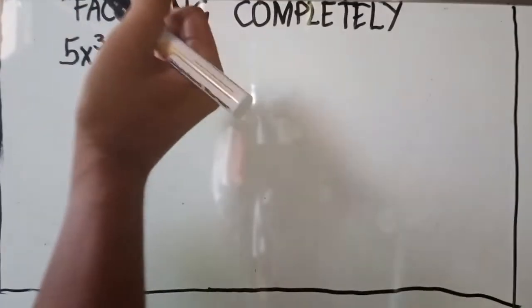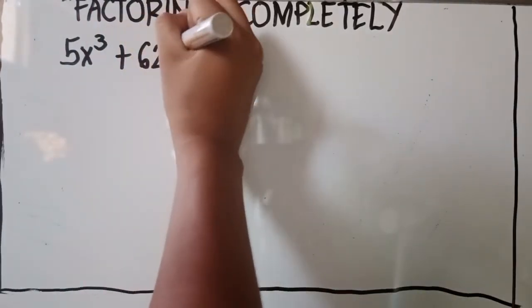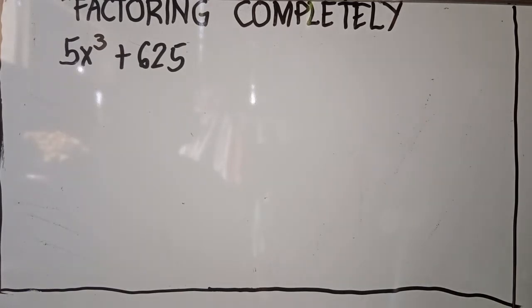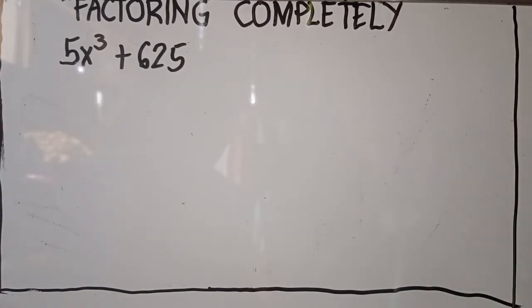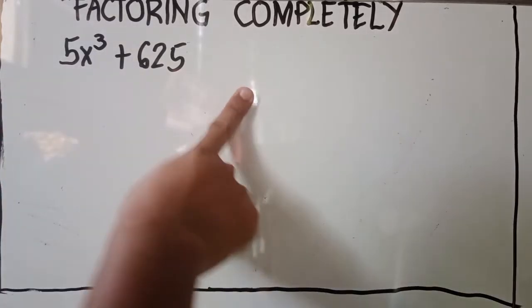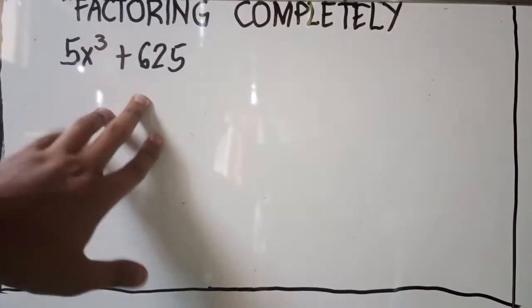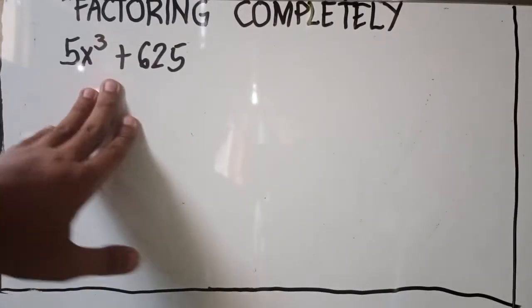For example, if we have 5x³ + 625, you are tasked to factor this out completely. When you see a given expression like this, the first method you have to use is to look for the common monomial factor. By simply looking at this given expression, we can conclude that there is a common monomial factor, which is 5.